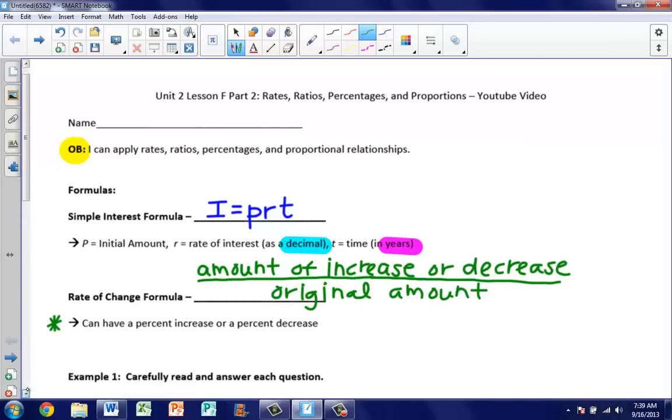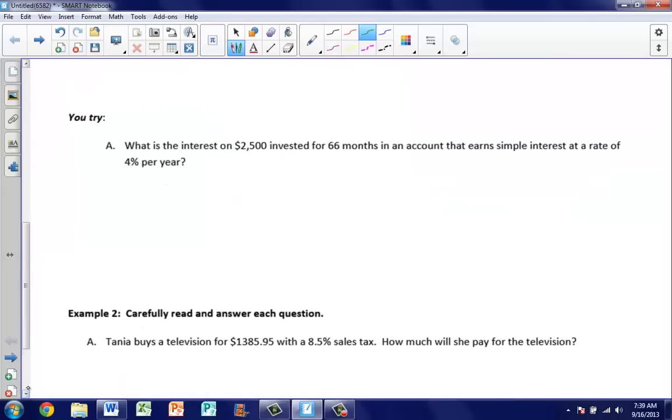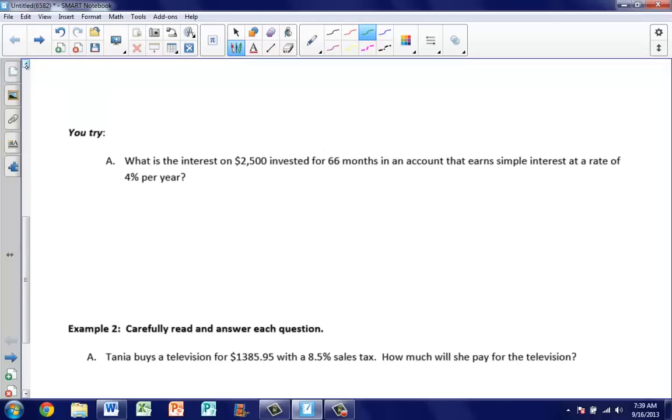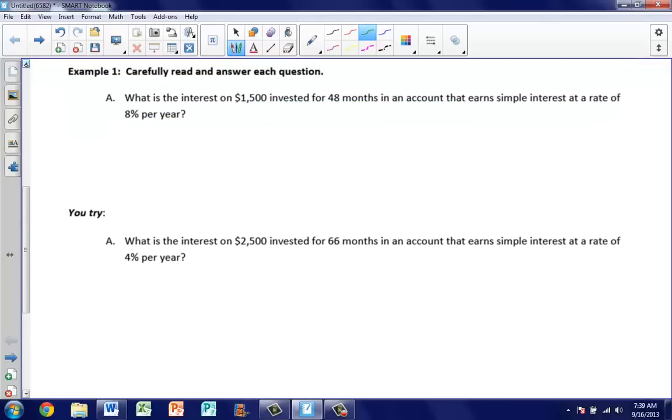Let's take a look at our first example. We want to make sure that we're carefully reading and answering each question. What is the interest on $1,500 invested for 48 months in an account that earns simple interest at a rate of 8% per year? Right away it's asking what is the interest, so you should already have written down I equals P times R times T. That's the formula we have to be working with.